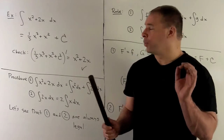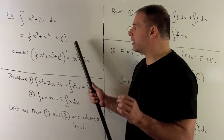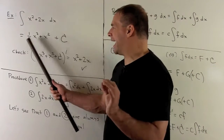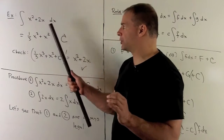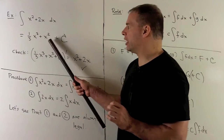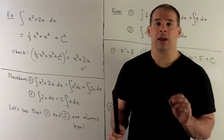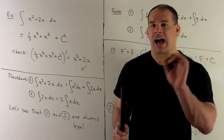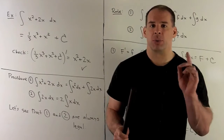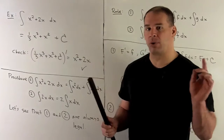Then we add a constant of integration. The idea here is that what we found is an antiderivative of x squared plus 2x. If we add constants to that, we get more antiderivatives. So we tack on the constant of integration to account for all of those.